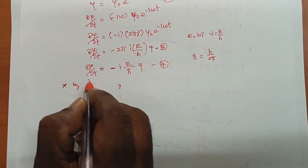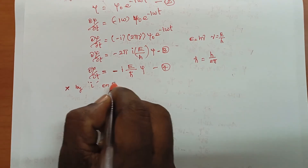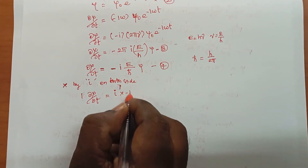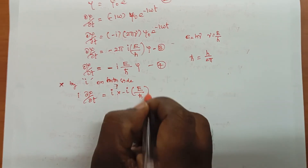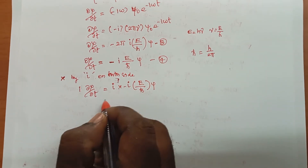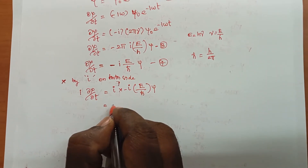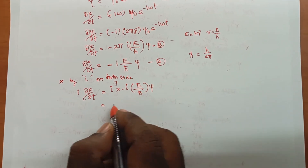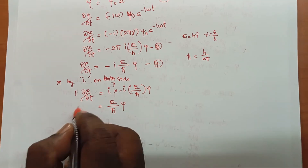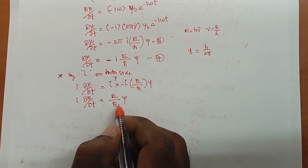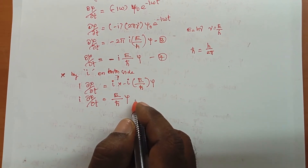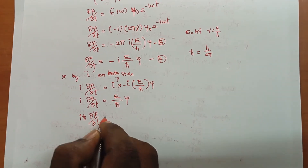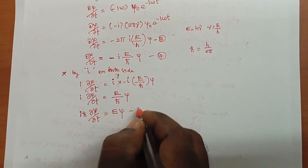Now multiply by i on both sides. So i·∂ψ/∂t equals i times minus i times E/ℏ into ψ. Since i times minus i equals minus i² and i² equals minus 1, this gives plus 1. So we can write e/ℏ into ψ equals i·∂ψ/∂t. Multiplying ℏ across: iℏ·∂ψ/∂t equals Eψ. This is equation number 5.